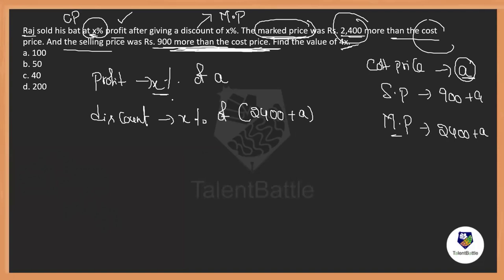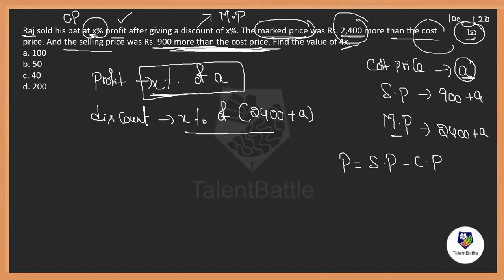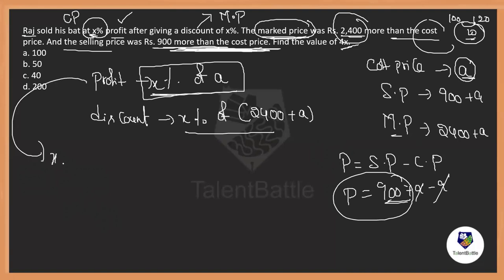If we observe carefully, profit in general is SP minus CP. Here SP = A + 900 and CP = A, so SP − CP = 900. Profit equals 900. Since profit is expressed as X% of A, we can say X% of A = 900. This is our first equation.